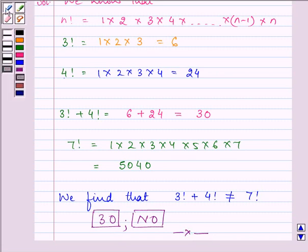Do remember, firstly you need to find out 3 factorial, then 4 factorial, then 7 factorial and their sum, and then you need to see whether 3 factorial plus 4 factorial is equal to the answer of 7 factorial or not. So bye for now.